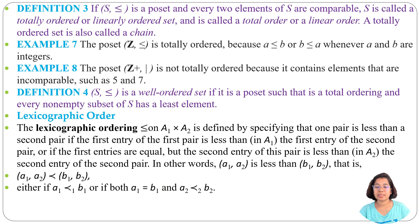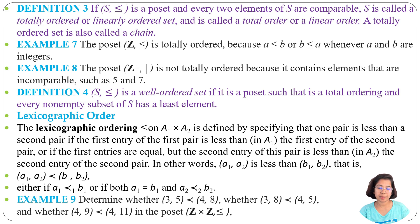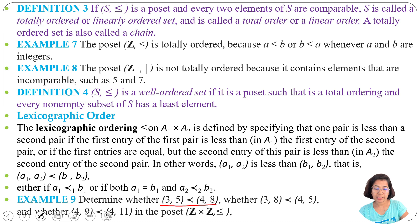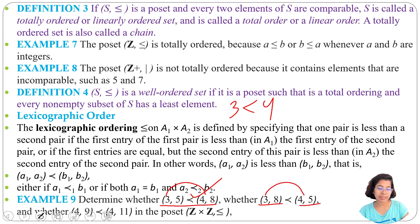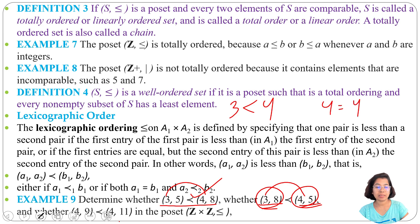Example 9: Determine whether (3,5) is comparable to (4,8), whether (3,8) is comparable to (4,5), and whether (4,9) is comparable to (4,11) in the poset Z × Z under ≤. For (3,5) and (4,8): since 3 < 4, they are lexicographically comparable. For (3,8) and (4,5): since 3 < 4, they are comparable — (3,8) < (4,5). For (4,9) and (4,11): the first entries are equal (4 = 4), but 9 < 11, so they are comparable.